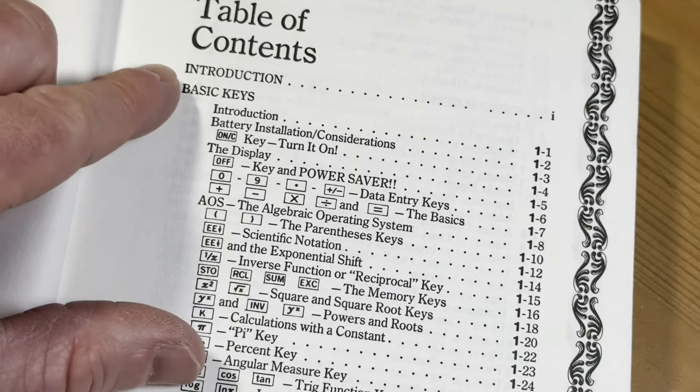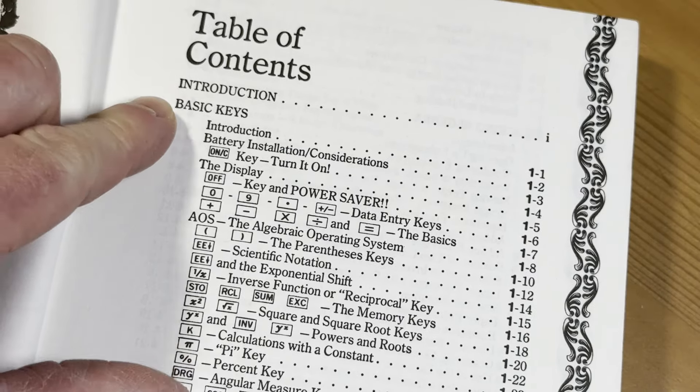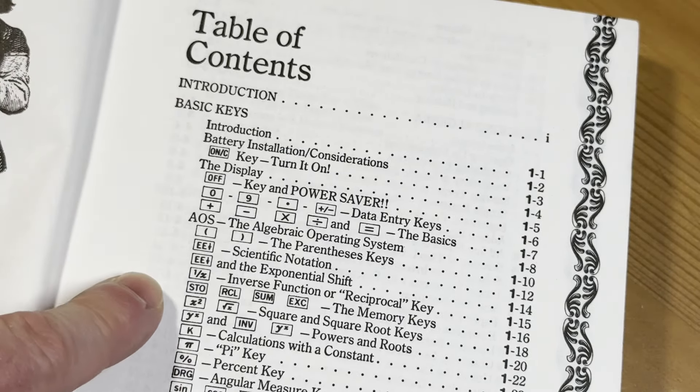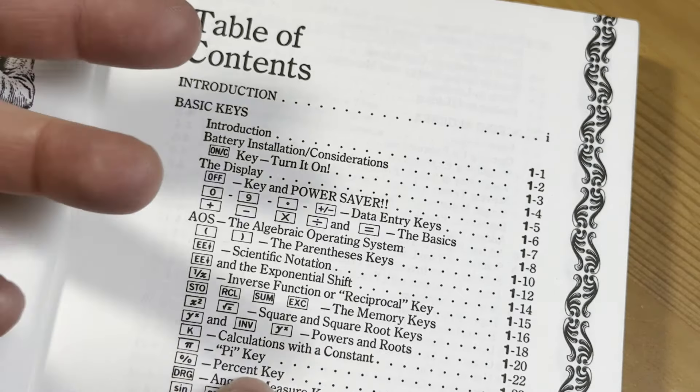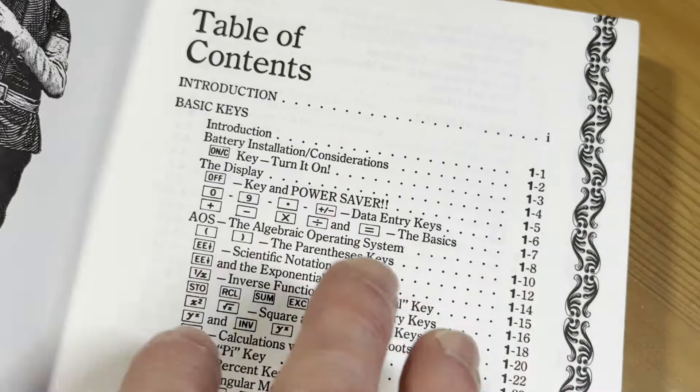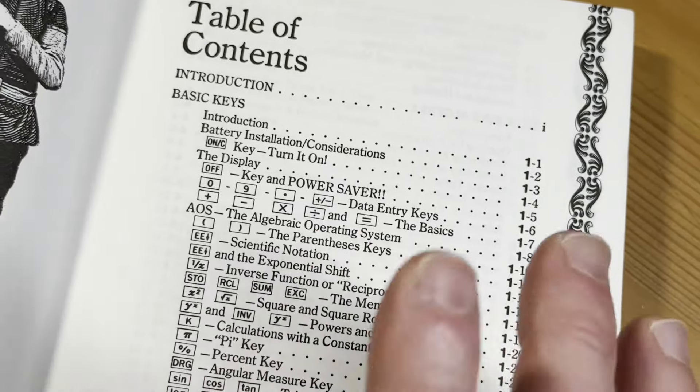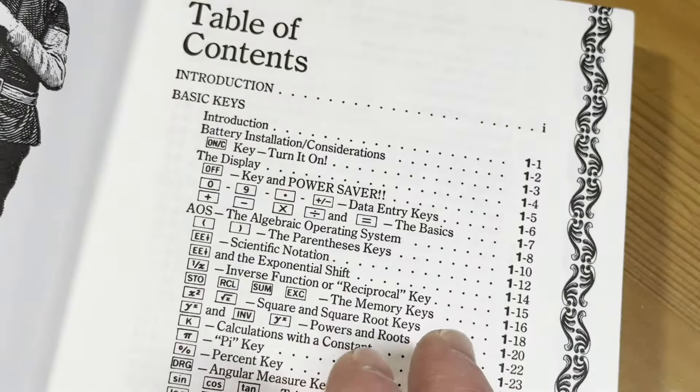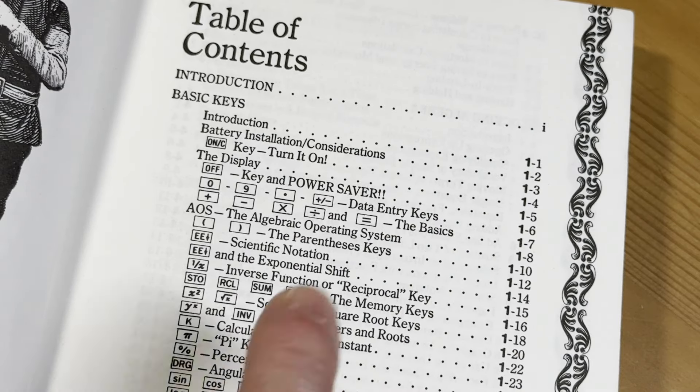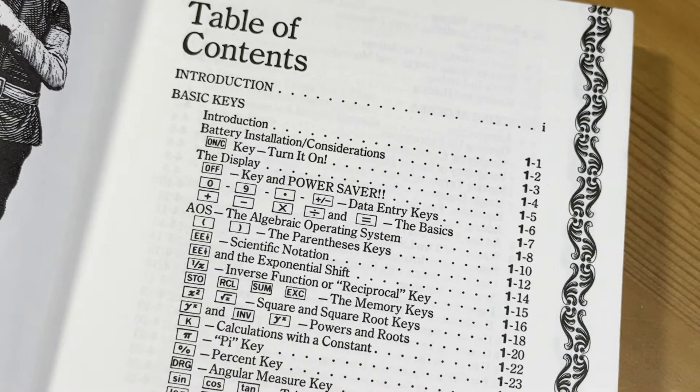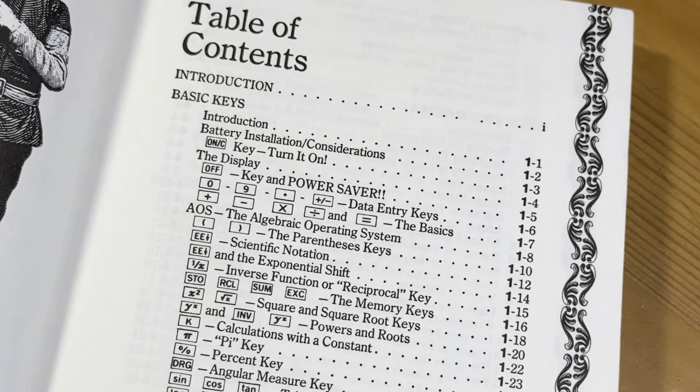And then here are the contents. Basic keys. It talks about basic keys, square and square root keys. We still have the pi key. A lot of these things still exist today, which is kind of cool. Like if you look at a calculator today, you have sine, cosine, tangent, and all of those things. I'm just going to grab my calculator right now just to show you.